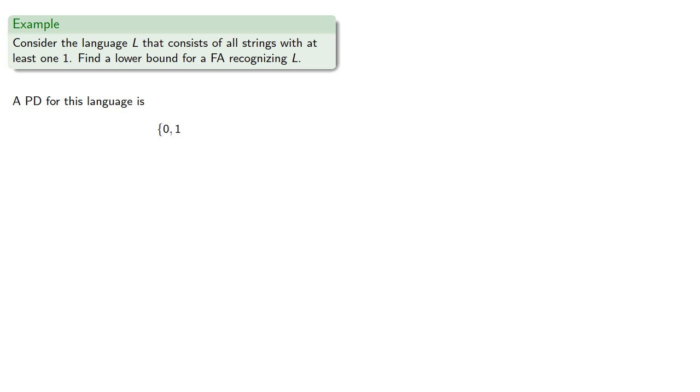So our pairwise distinguishable set so far includes none of the strings of length 0, both of the strings of length 1. What about strings of greater length?